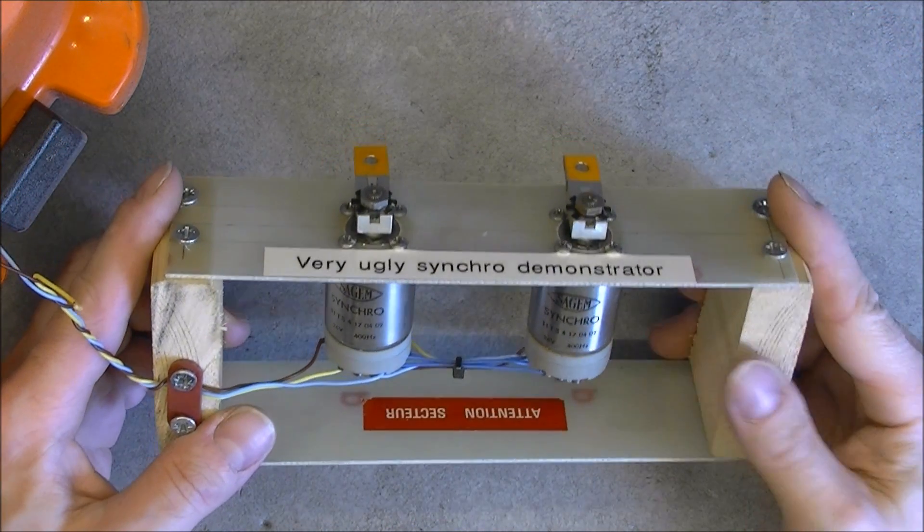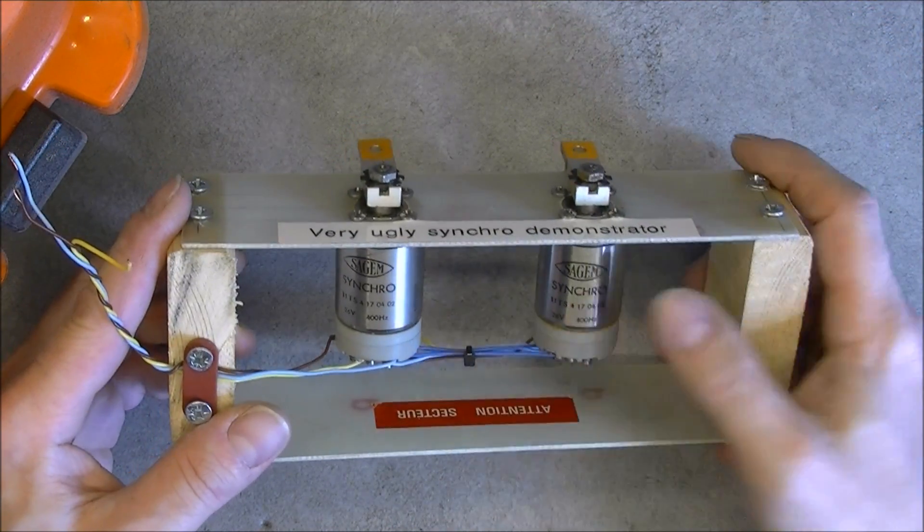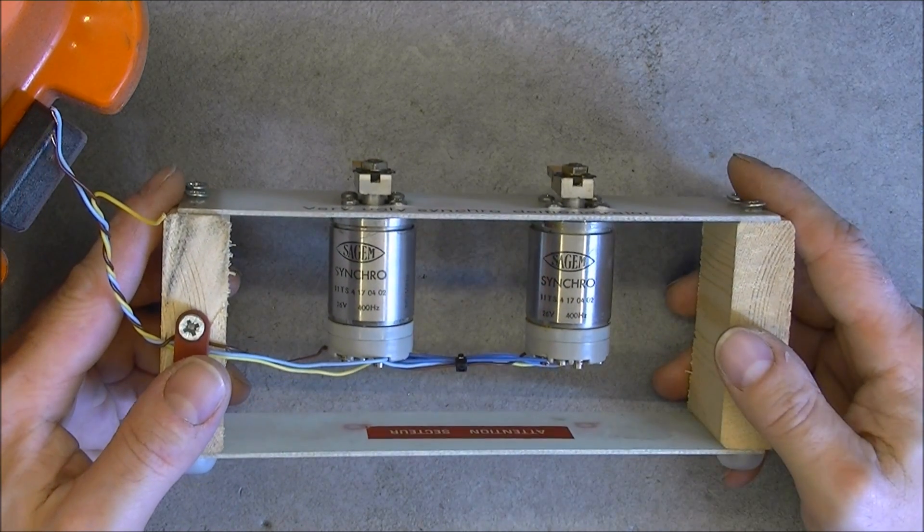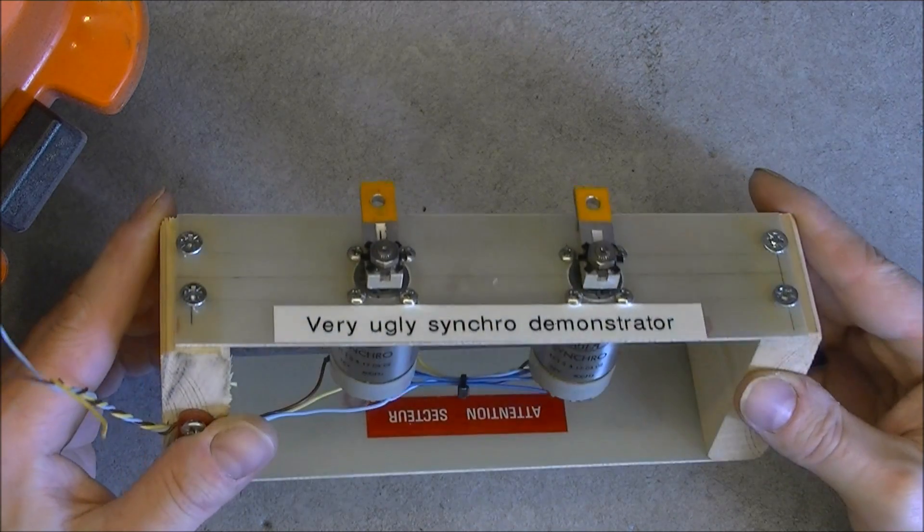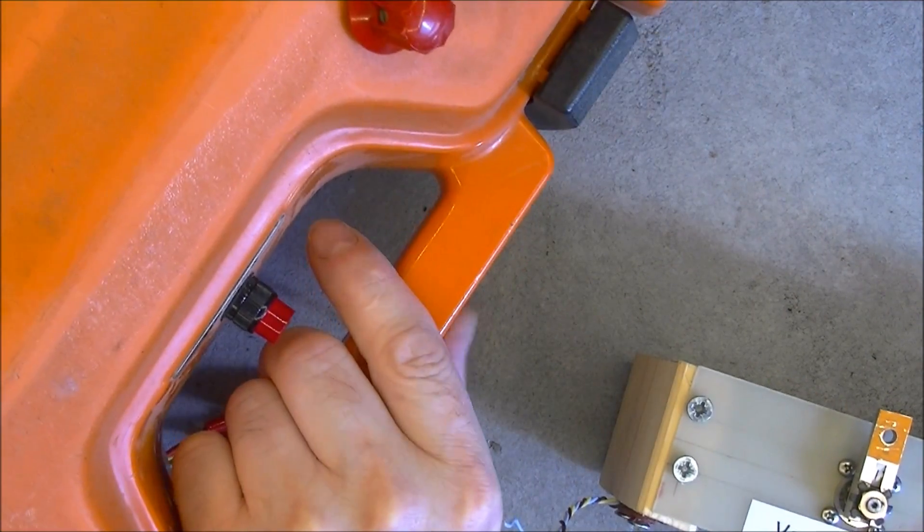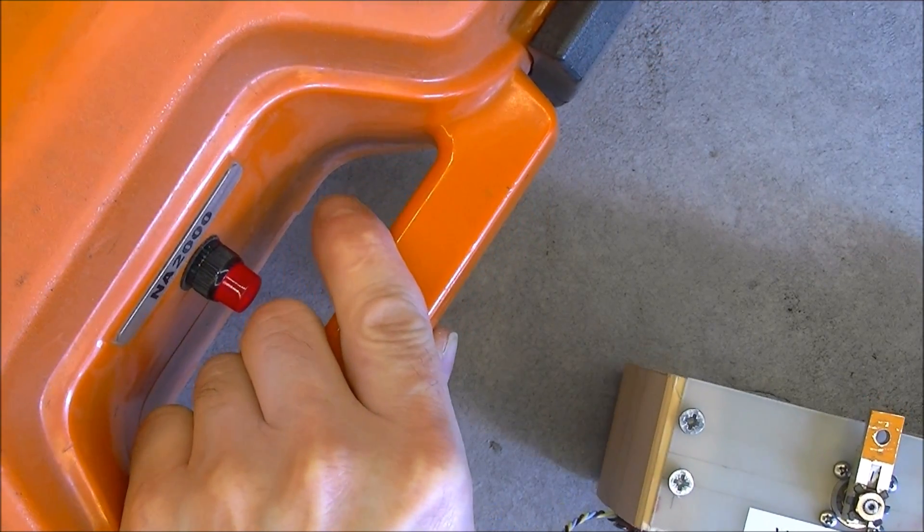So I scrapped the tank controller but I kept the two synchros out of it, and finally they found their use here. So we will test this with my trusty Not Acceptable 2000 three-phase generator.